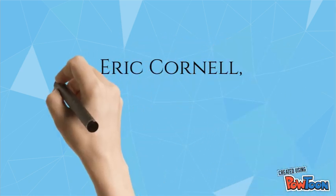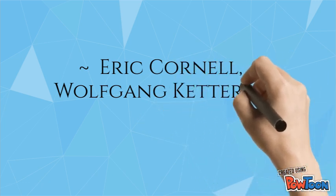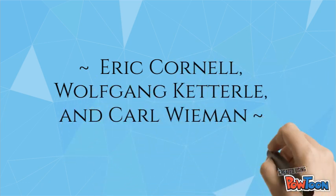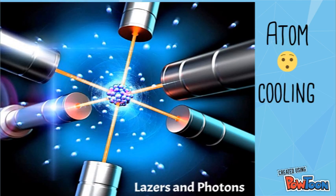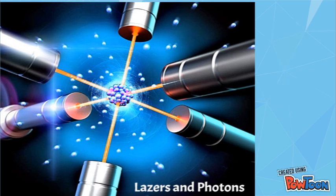But Eric Cornell, Wolfgang Ketterle, and Carl Wieman were. In 2001, they created a laser trap. This laser trap traps the atom, and with all the lasers pointing at it, it causes the atom to be at an exact rate in which it can absorb photons. The photons are absorbed and re-emitted in random directions, therefore cooling the atom down significantly.